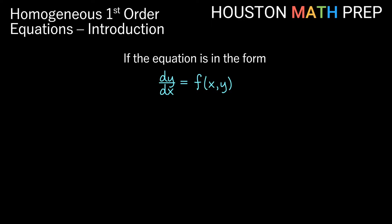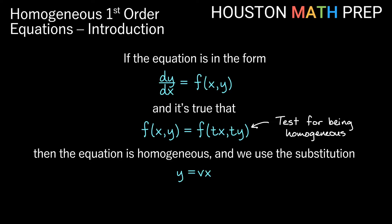For a homogeneous first-order equation, if we can write the equation as dy/dx equals some function of x and y, so all of the xy terms are on the right side there, and we can show it's true that f(x,y) is the same as f(tx,ty). This is actually our test for a first-order equation being homogeneous. If I plug in tx everywhere there's an x in my function, and I plug in ty everywhere there's a y in my function, if I'm able to simplify that and get the same statement that I started with, then we will say that this equation is homogeneous, and we will use the substitution y equals v times x, where v is also some function of x.